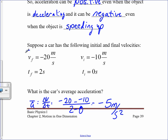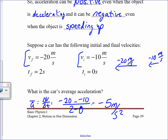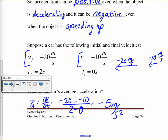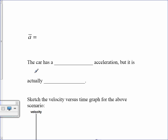Notice that the final velocity is bigger in magnitude than the initial velocity. Initially it was traveling at negative 10 meters per second, but after 2 seconds it's traveling at negative 20 meters per second. So it has a negative acceleration, but it's actually speeding up. We get confused because we might assume 'accelerating' means a positive acceleration, but that's not necessarily the case.